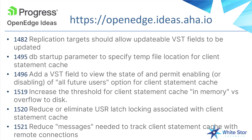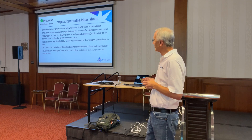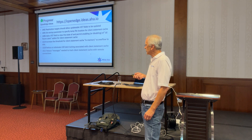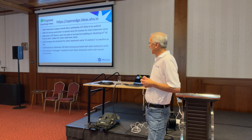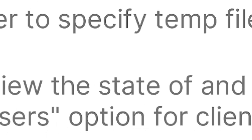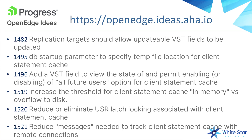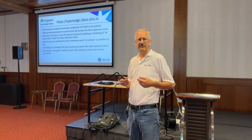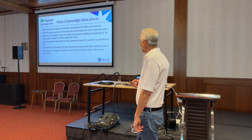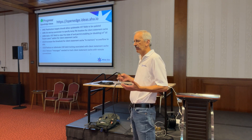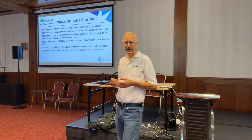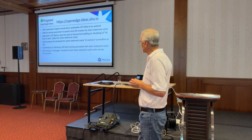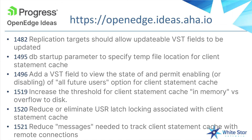Here are some enhancement requests. If you go to openedge.ideas.aha.io, there are six things you could vote for to make the client statement cache better — including: being able to update replication targets, having DB startup parameters, adding a VST field to enable all future clients to have CSC on, increasing the threshold for the in-memory cache beyond 256 bytes (1K or 4K would be better), reducing or eliminating the user latching, and consolidating the number of messages going back and forth in the client-server protocol.